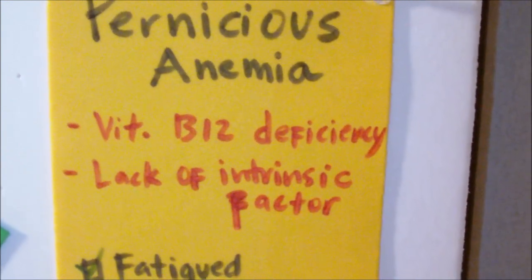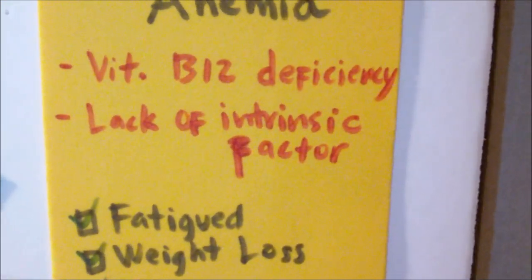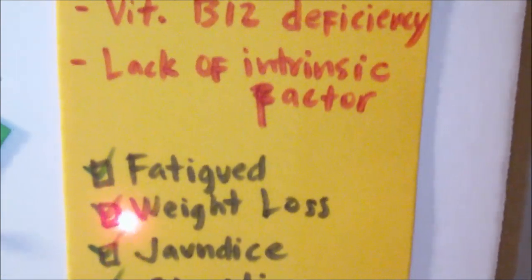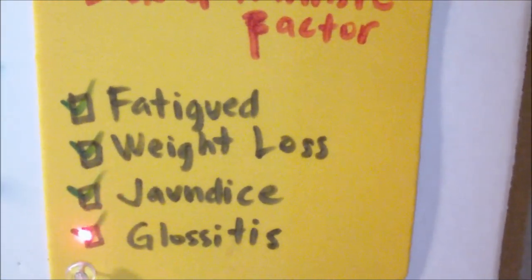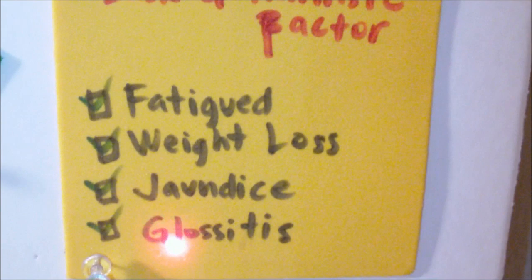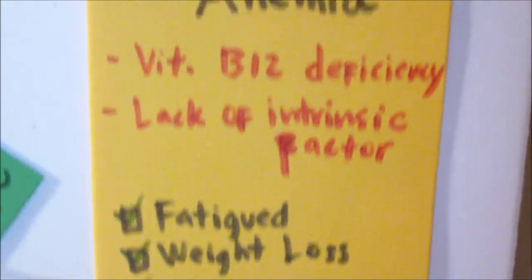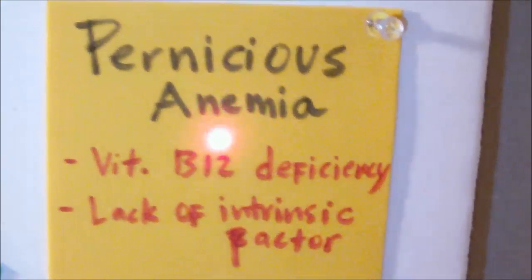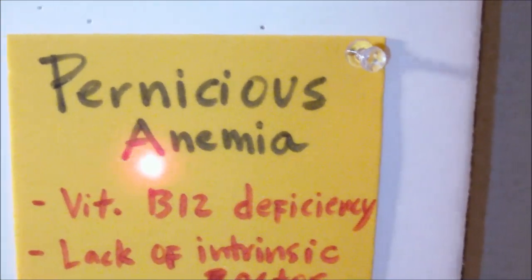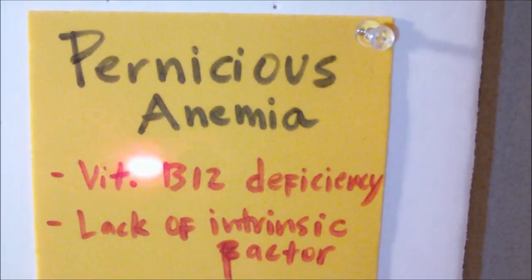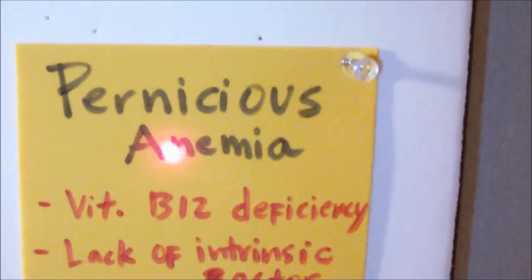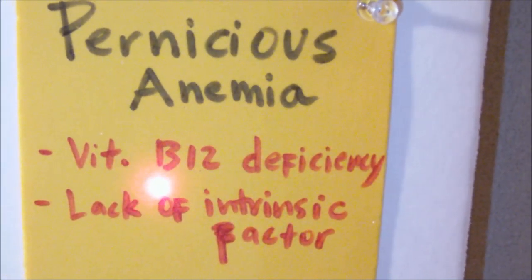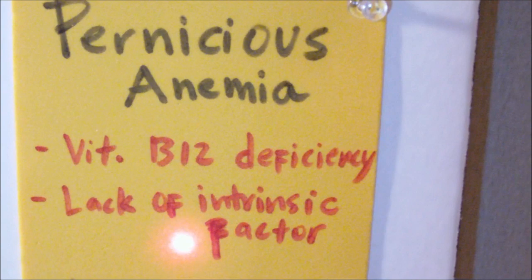Patients with pernicious anemia would usually be fatigued, have weight loss, be jaundiced, and have glossitis, which is a smooth beefy red tongue. If the vitamin B12 deficiency is due to a poor diet, we can teach the patient to eat foods that contain higher levels of vitamin B12, such as organ meats, nuts, dried beans, liver, and green leafy vegetables.